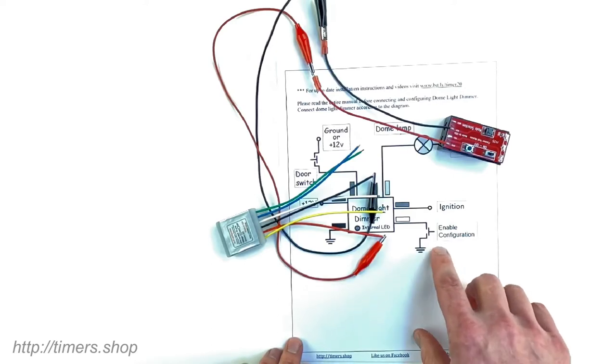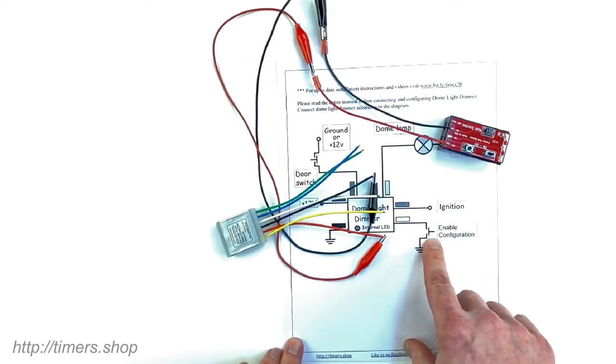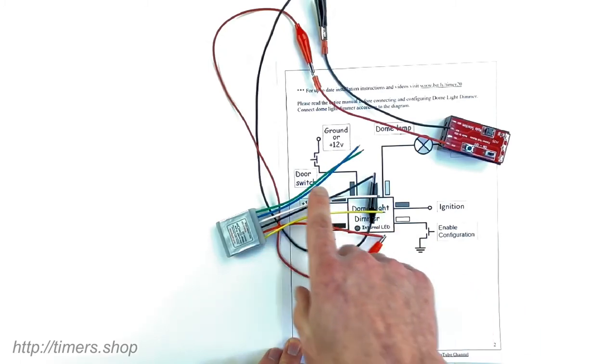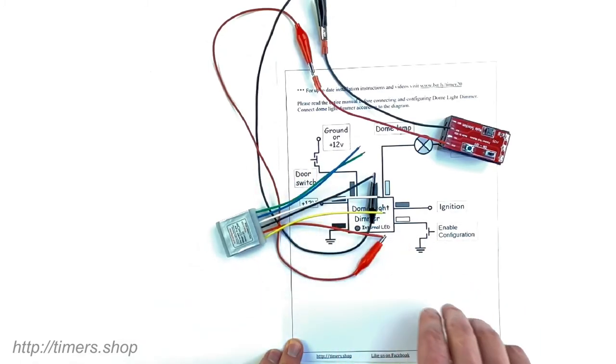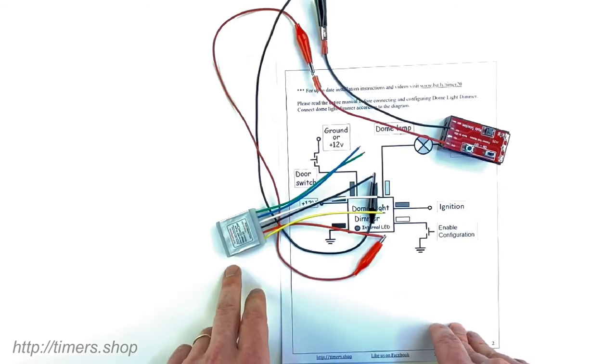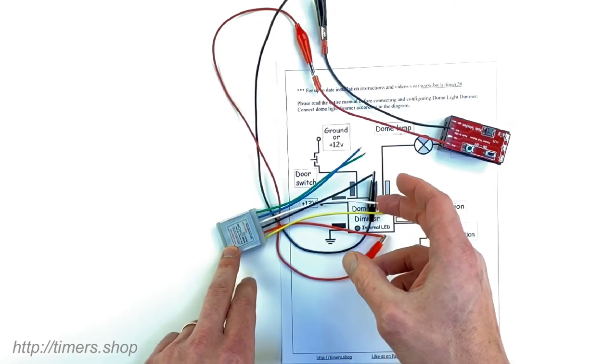To enable configuration, you can either ground the white wire or you can use that switch. If you just push on that switch with your hand quickly 10 times, the timer is going to go into configuration mode, because sometimes you might not have access to the white wire.